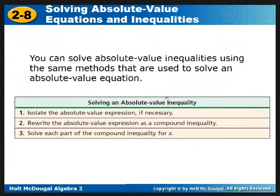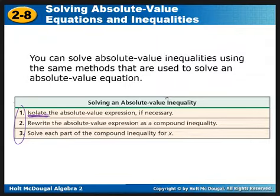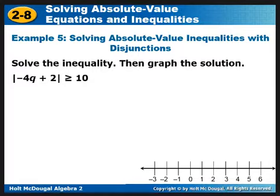Now we get to the inequality part. Step one and the most important thing: isolate the absolute value expression before doing anything else. You cannot rewrite it as a compound inequality until the absolute value part is by itself. Looking at this example, the absolute value part is already isolated, so we're good. The inequality sign is greater than, which means we will have an 'or' inequality — a disjunction.